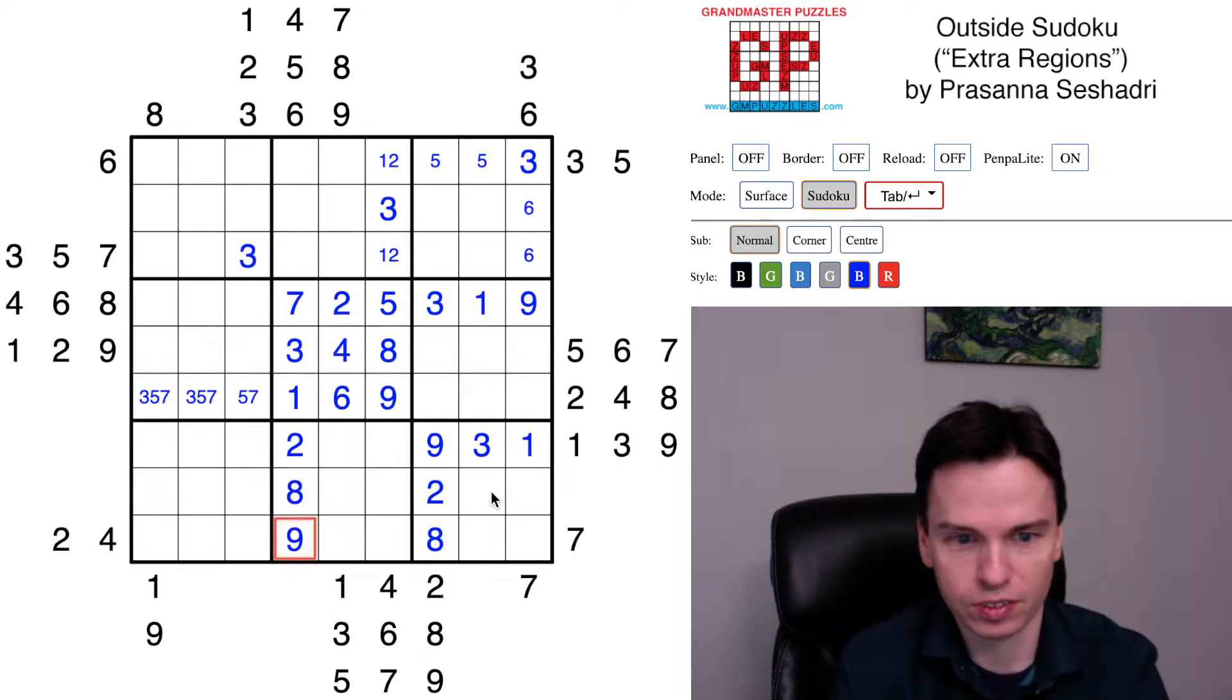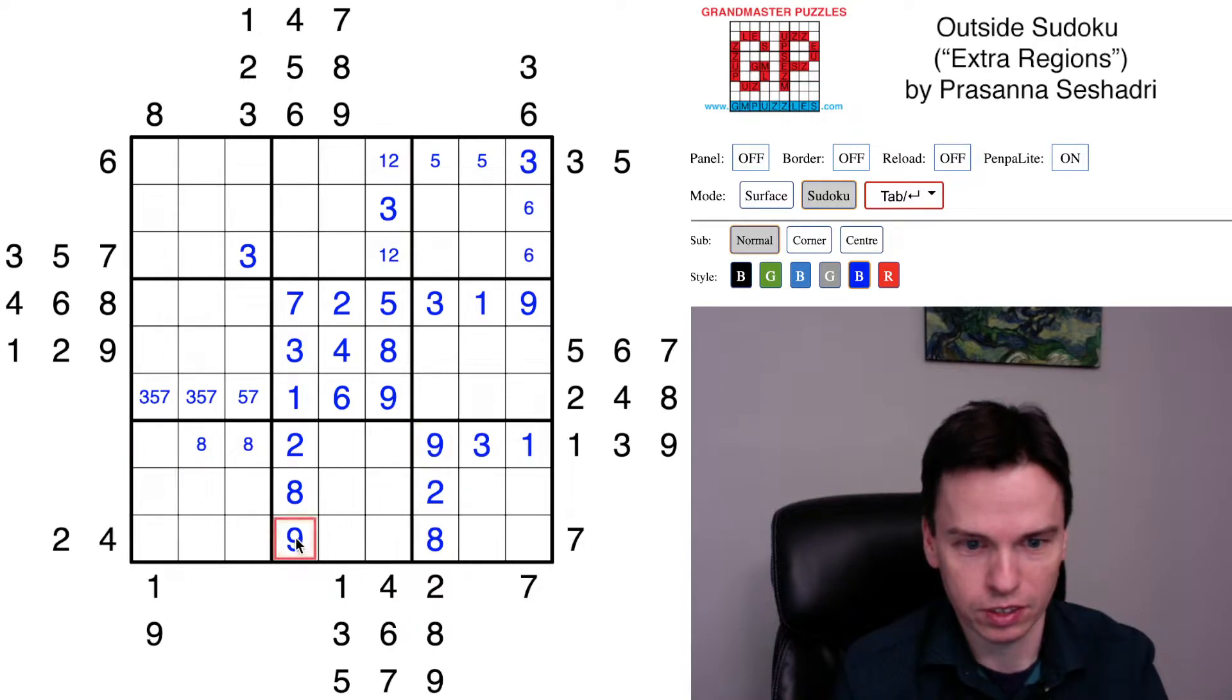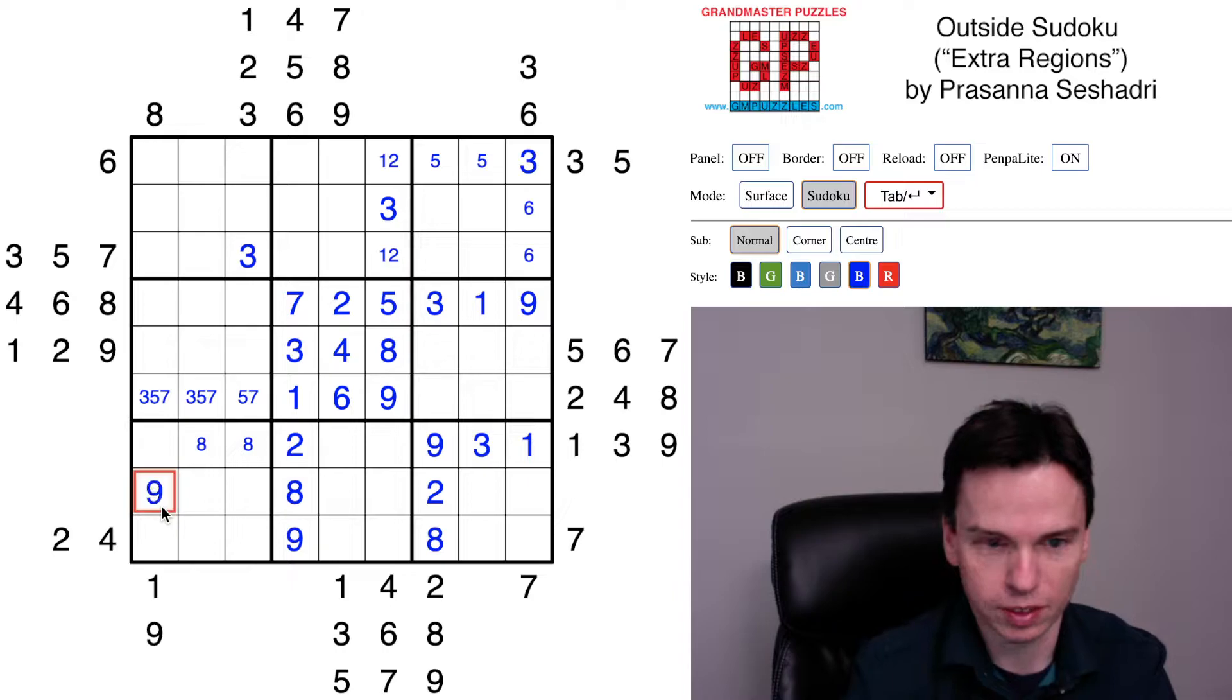2, 8, 9 in these cells gets filled in quickly. We get an 8 up top somewhere, it's not in this first column because there's a 1 clue up above. These two nines means the 9 is in the box, but this 9 is also clued here so this 9 has to be there.